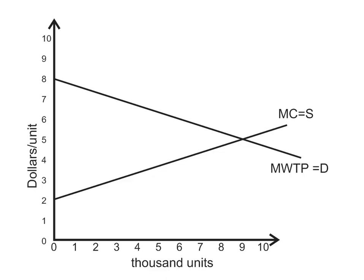So consider the situation where we've got a standard marginal cost curve leading to a supply curve and a marginal willingness to pay curve that leads to a demand curve. In this situation, the price would equal $5 and the quantity provided would be 9,000 units.